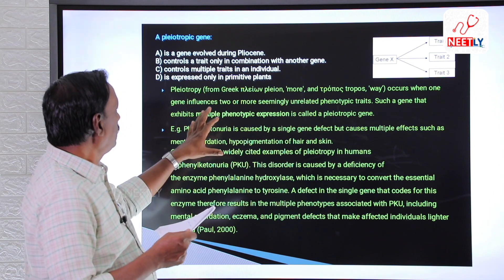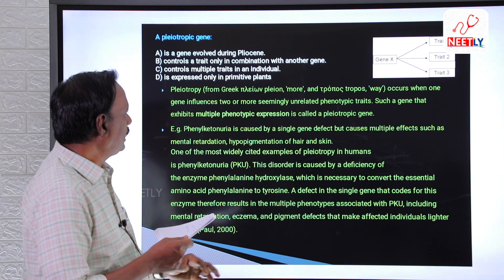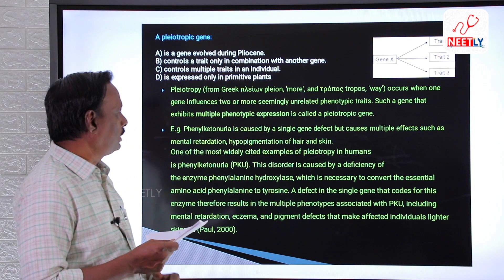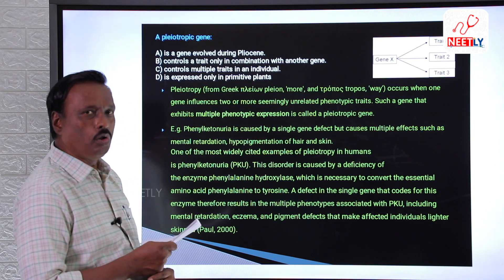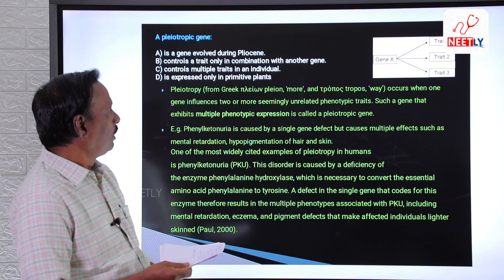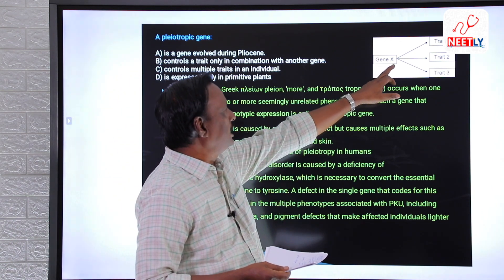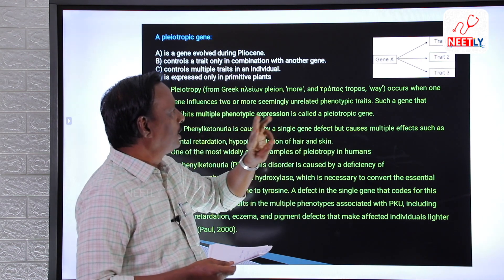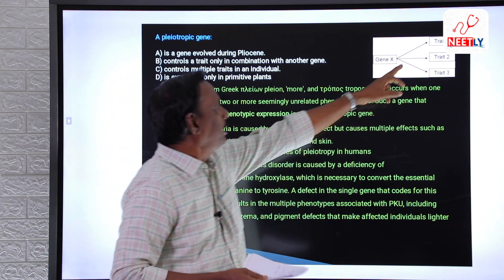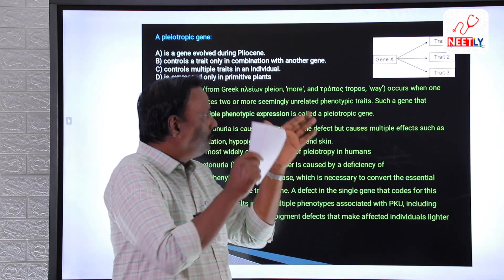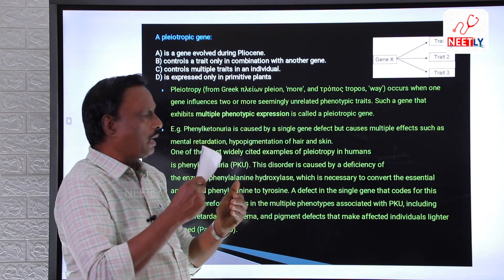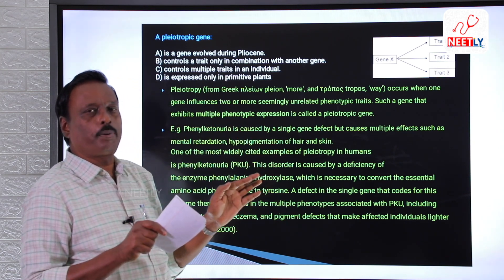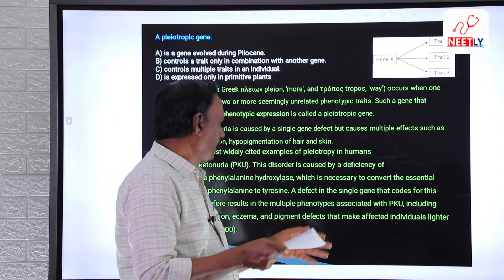But there are some exceptional cases which we call pleiotropic genes. These pleiotropic genes can control more than one trait. For example, gene X is a single gene, but it controls three traits — trait one, trait two, and trait three — and these three traits are unrelated to each other; all three are different in their properties.